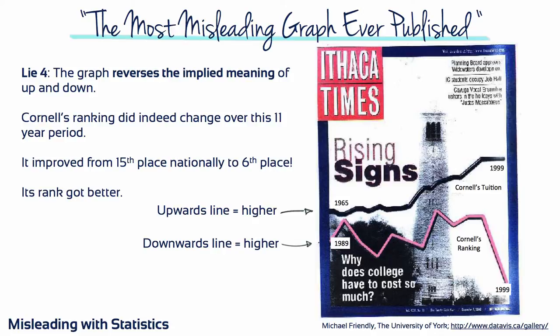Lie number four: the graph reverses the implied meaning of up and down. Cornell University's ranking did indeed change over this 11-year period — it improved from 15th place nationally to 6th place. Cornell's ranking didn't get worse; it got better. Why then does the line representing Cornell's ranking go down? This astonishing graphic lie reversed the direction of the numbers. In the business of rankings, a low number is good, but the graph maker made sure that the positive information about Cornell was portrayed by a line going down. If this graph were true to its data, the line representing quality of education would be rising rather impressively from 15th place to 6th place. Yet this line portrays Cornell's quality of education as falling dramatically. Taken at face value, the graph tells a negative story that might sell more newspapers — the most likely reason this misleading graph was created.